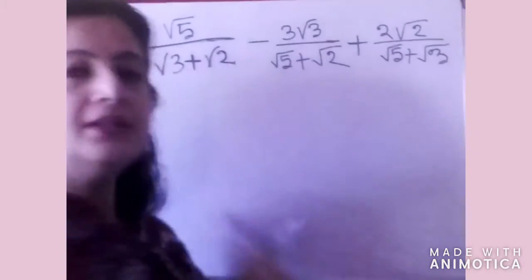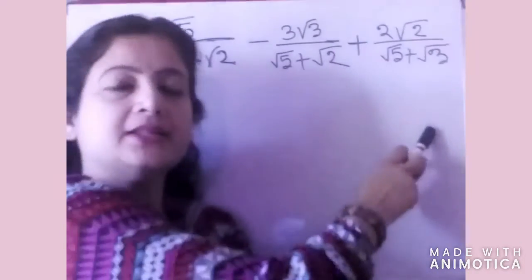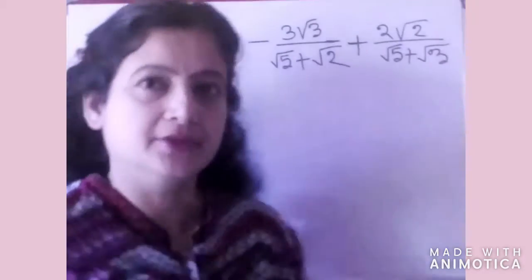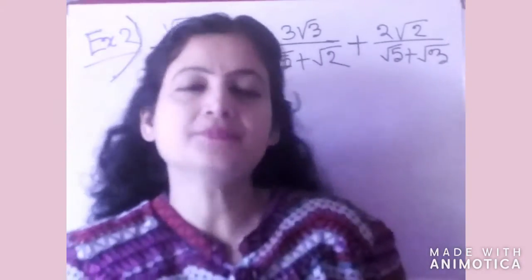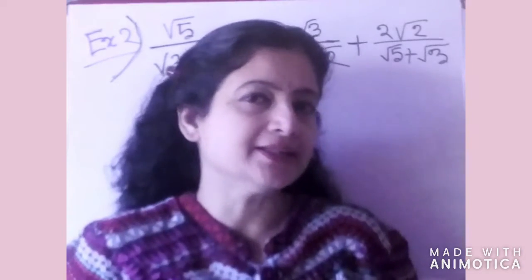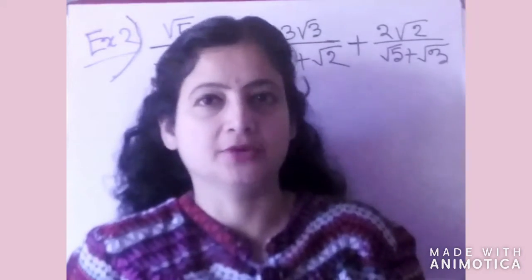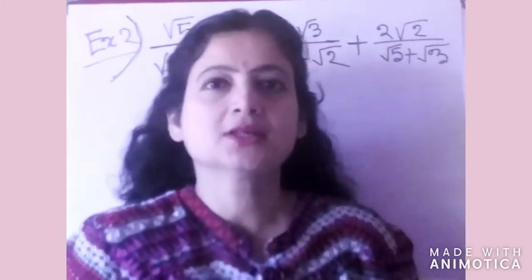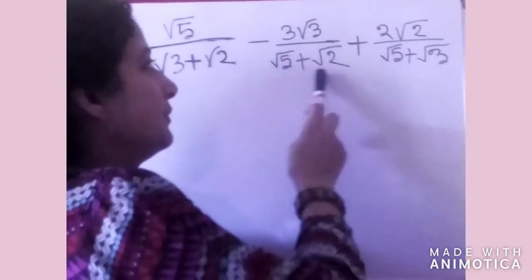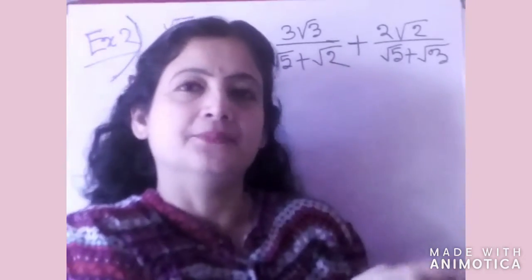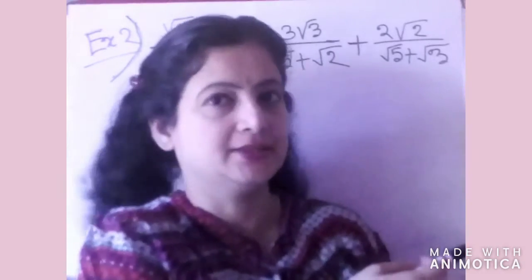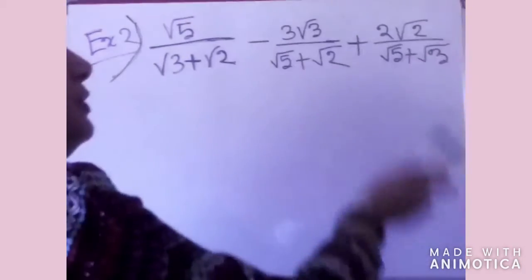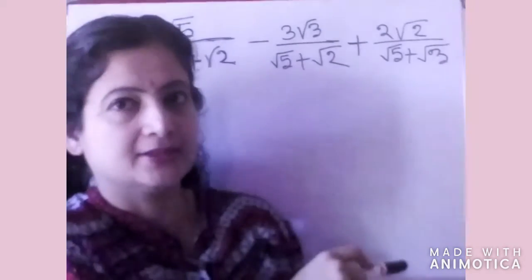Now see Example 2. The answer is written in fraction form — there are three fractions. In the case of this type of form, what we will do is rationalize the denominator. We will try to rationalize the denominator, and to do it we will multiply the denominator with its complementary surd. Here the denominator is a surd, and we will multiply this surd with its complementary surd.